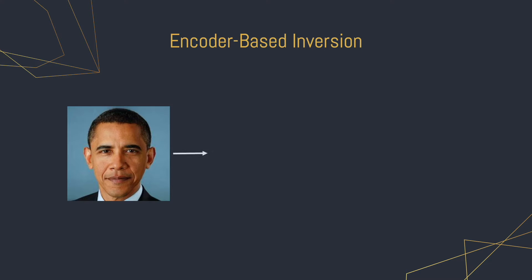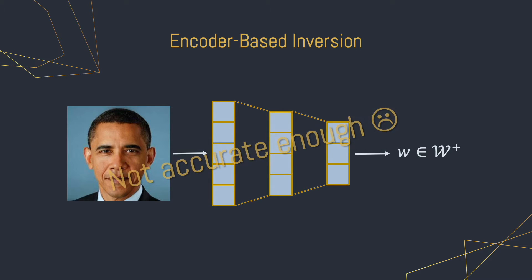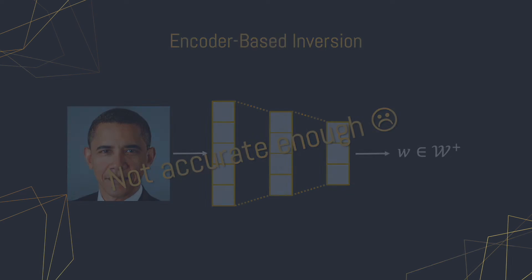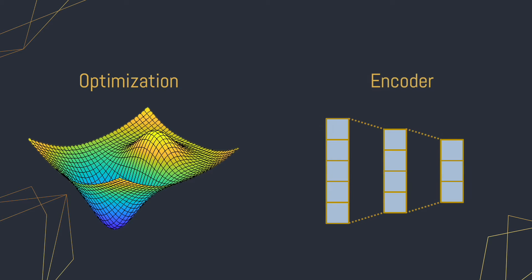Some recent works design an encoder to learn a mapping between a real image and its corresponding latent representation. However, in terms of reconstruction quality, there remains a significant gap between optimization-based and encoder-based inversion methods. Therefore, designing a proper encoder and training scheme remains a challenge, with many works still resorting to using a per-image optimization.